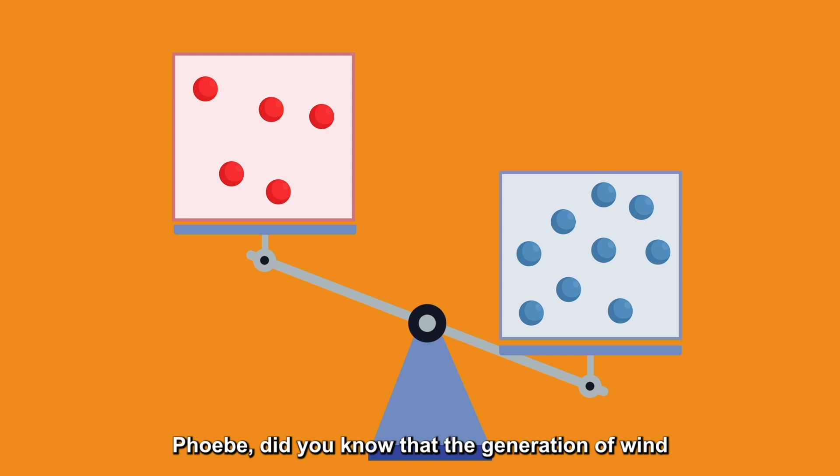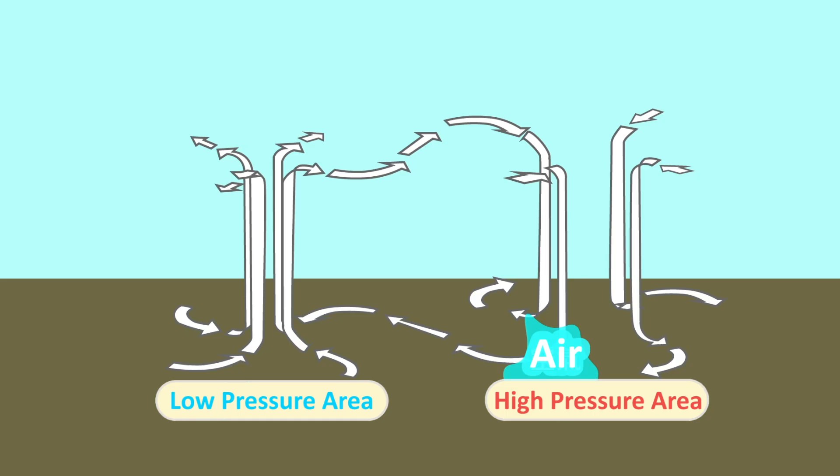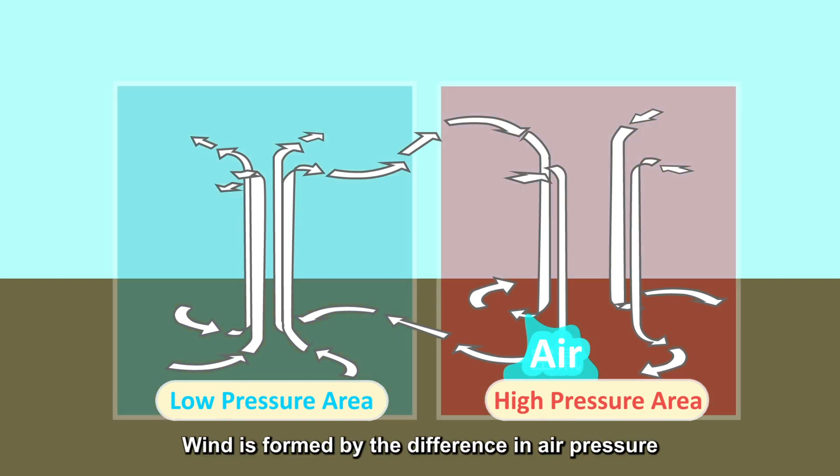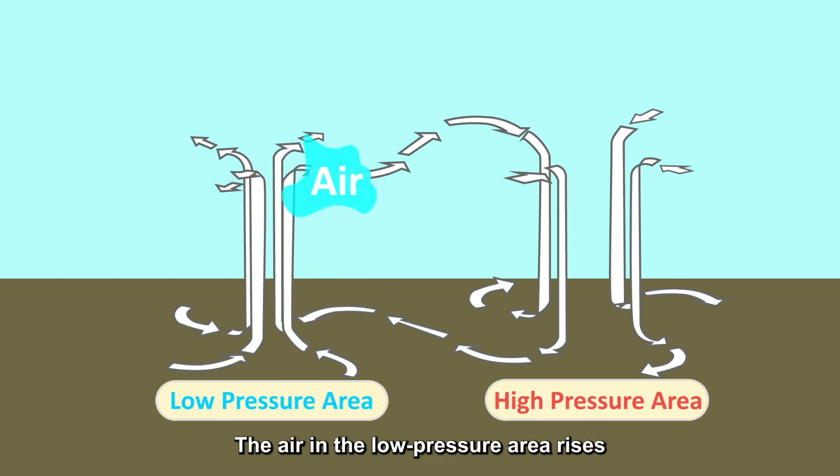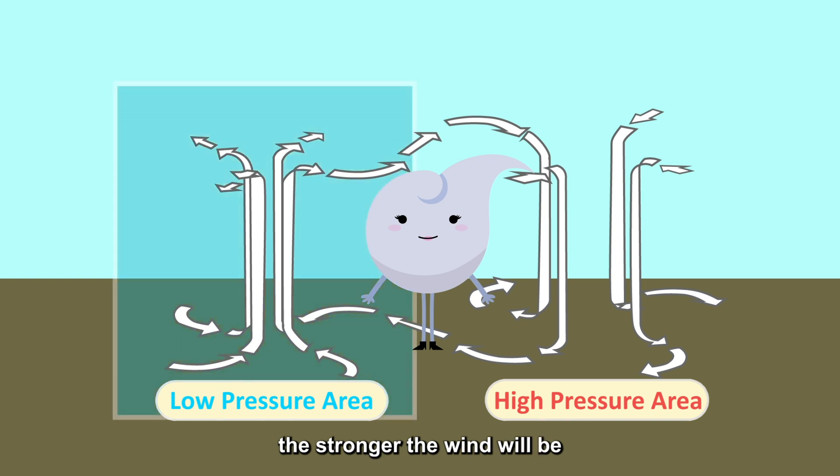Phoebe, did you know that the generation of wind is closely related to air pressure? I didn't know! Wind is formed by the difference in air pressure. Air moves from the high-pressure area to low-pressure area. The air in the low-pressure area rises, and the air in the high-pressure area sinks. The flow of air forms the wind. The lower the air pressure in the center of the low-pressure area, the stronger the wind will be.